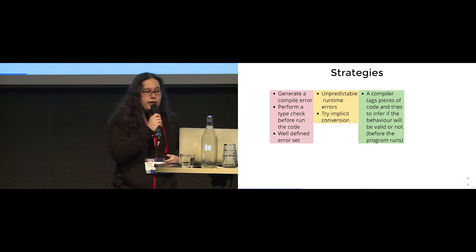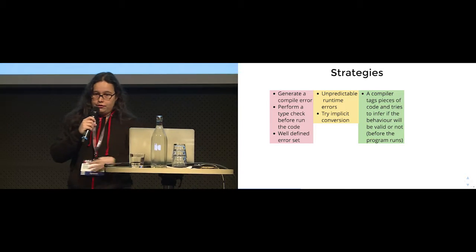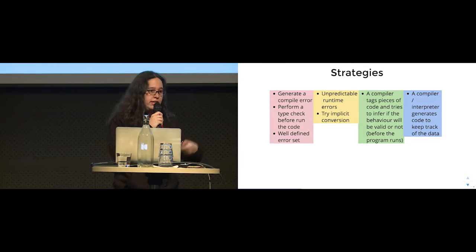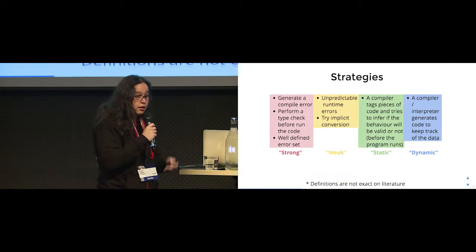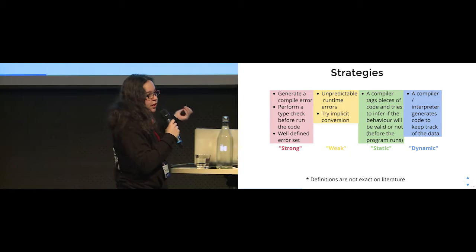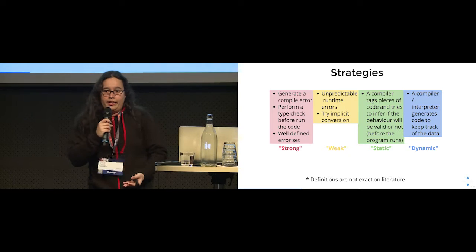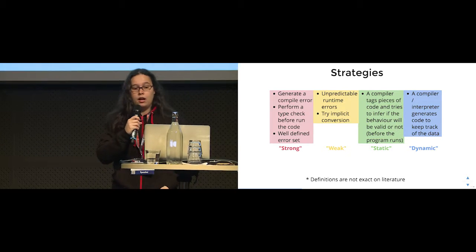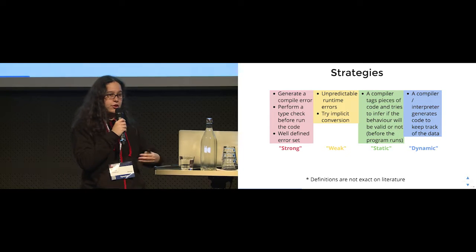You can come up with a compiler that tags pieces of your code and tries to infer the behavior, determining if it's valid or not. Or you can have a compiler or interpreter that generates more code to keep track of what you're writing. For each of these strategies, people add names: generating a compile error with a well-defined error set is what we call strong typing. If the compiler tries to do something with incompatible data, we call it weak. Similarly, you have static and dynamic — labels for strategies used to handle representation errors.